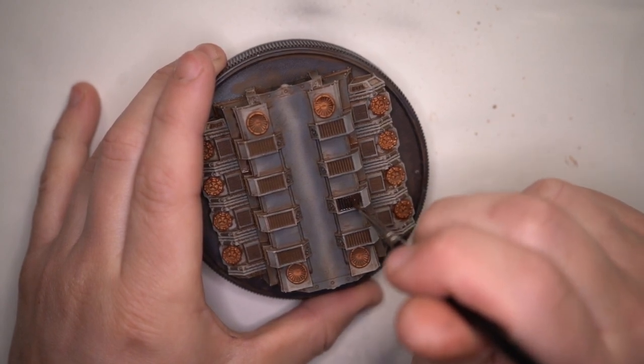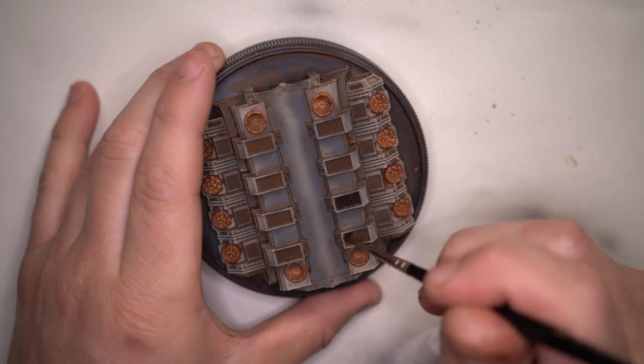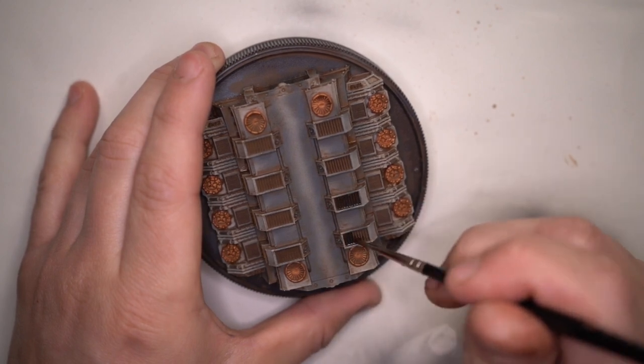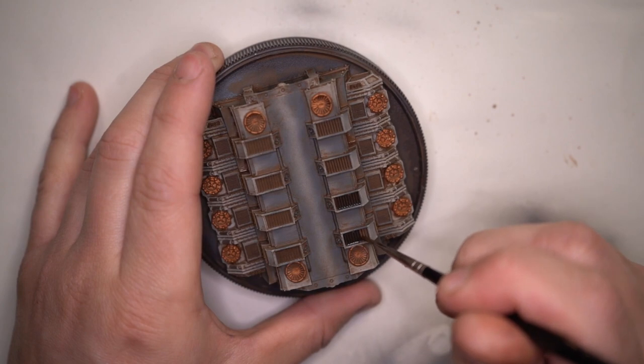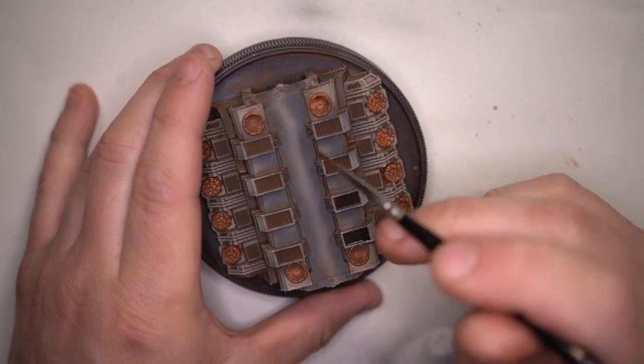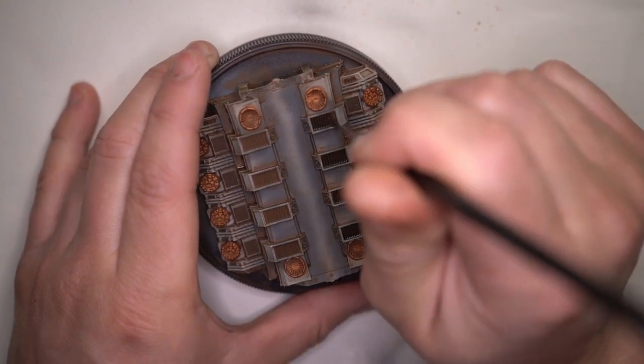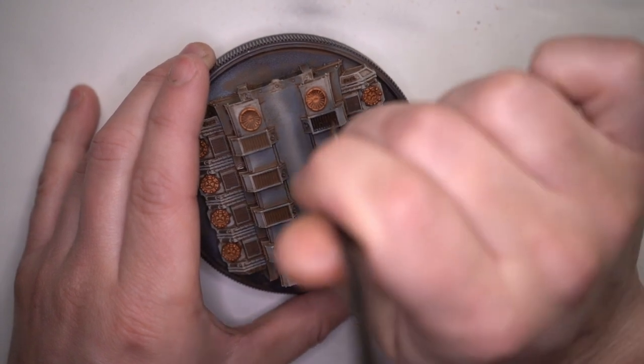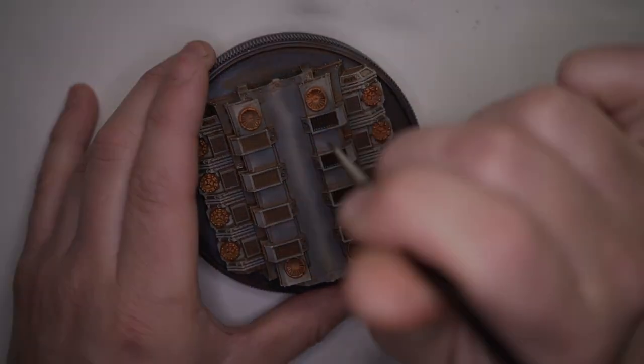And just to make the vents on the top even more deep and dirty, I added Nuln oil as well, just to really imply that these vents go much further into the building. Otherwise, if it's just got the burnt umber sitting on top, it doesn't really look like those vents are actual holes. And that's why the Nuln oil was added here.